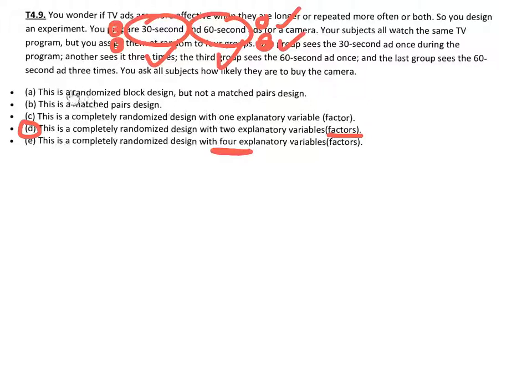For letter A, it says here is a randomized block design, but not matched pairs. And for B says it's matched pairs. It's neither of these two. A block design is you're going to kind of group them into like groups. We don't have like groups of watchers. We don't have like a group of men and a group of women or teenagers and older people. So they are just keeping them all random. Match pairs would be a similar form of blocking, but you would either do it for one person and look at two treatments or you would look at two different people and match them up. So it's not that. And we already talked about it's not one explanatory variable and it's not four.